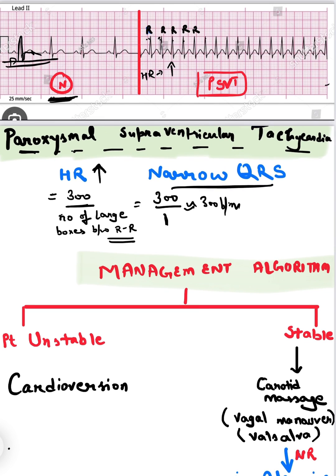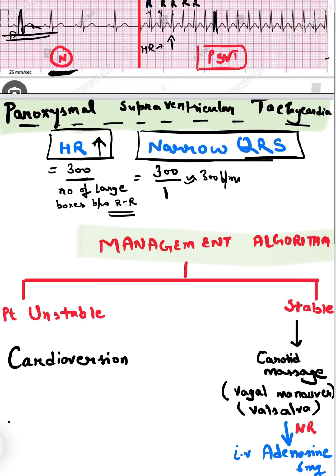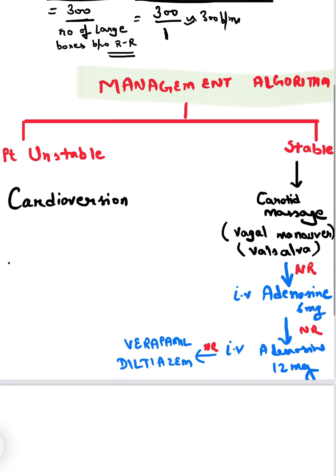There is a narrow QRS complex — it is very narrow, not even a single box present within the QRS wave. By these two findings — high heart rate and narrow QRS complex — we can diagnose this as paroxysmal supraventricular tachycardia (PSVT). Now what about the management algorithm?